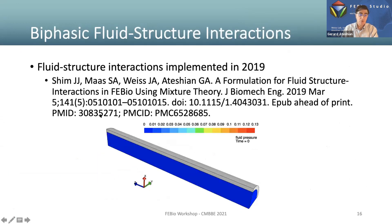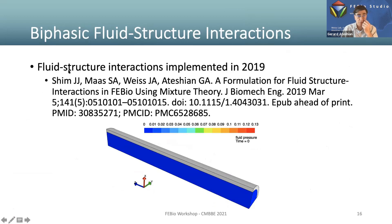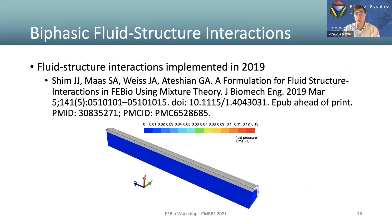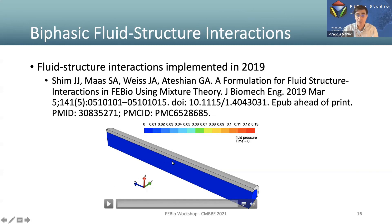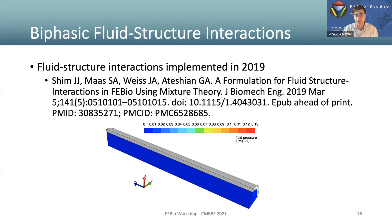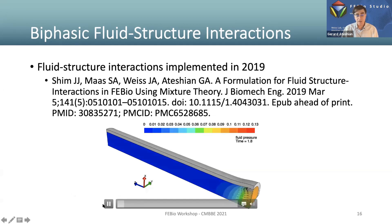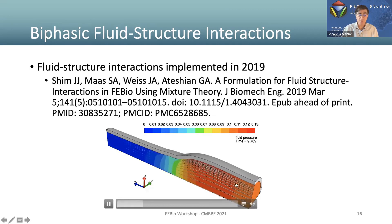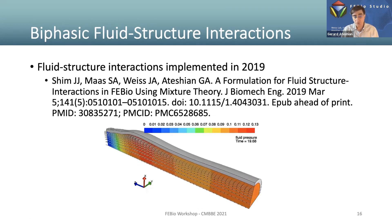We then implemented fluid flow in a deformable domain — fluid structure interaction in 2019. An elastic tube surrounds the fluid domain. We implemented this as a biphasic mixture where the fluid domain mesh has very low stiffness, zero friction between fluid and solid, and negligible mass. Pressurized fluid inflates the tube and flows through. Here is a biological application with a bifurcated carotid artery with an added arterial wall modeled using the nonlinear Holzapfel-Gasser-Ogden material model available in FEBIO.